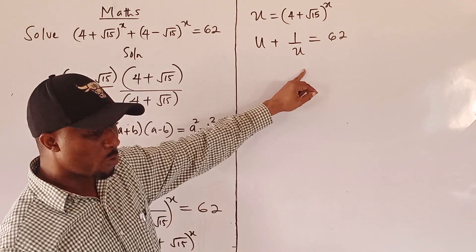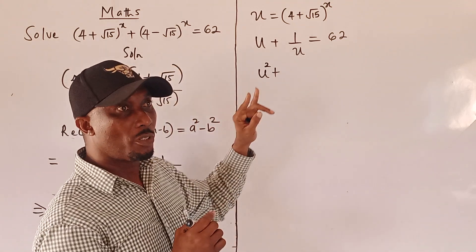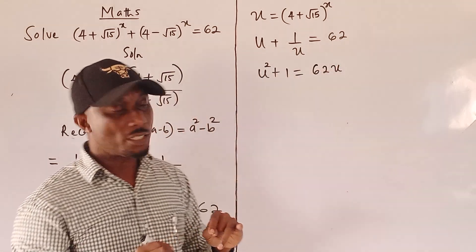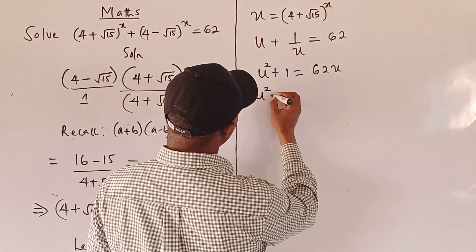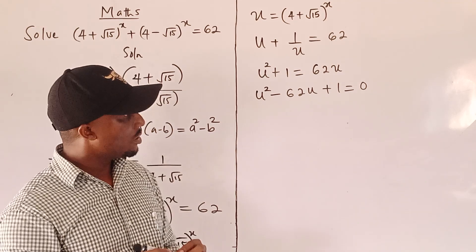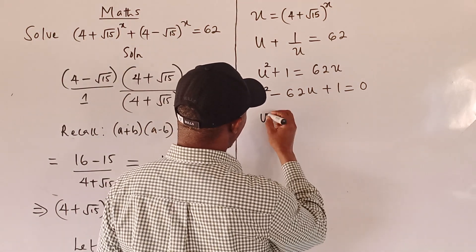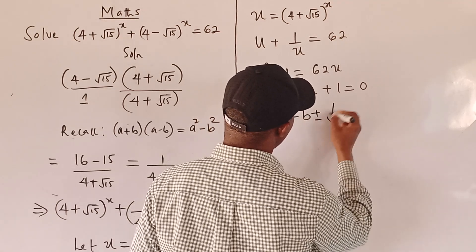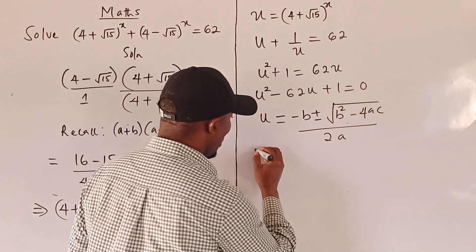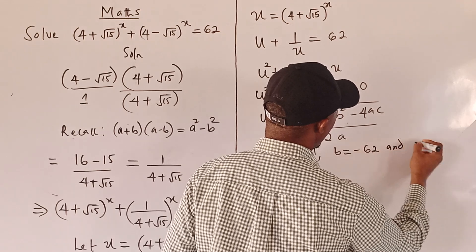It's a quadratic equation. To multiply each term on the left and right by u, this will give u² + 1 = 62u. Rearranging, we have u² − 62u + 1 = 0. This cannot be factorized, so we are going to use the quadratic formula, where a = 1, b = −62, and c = 1.